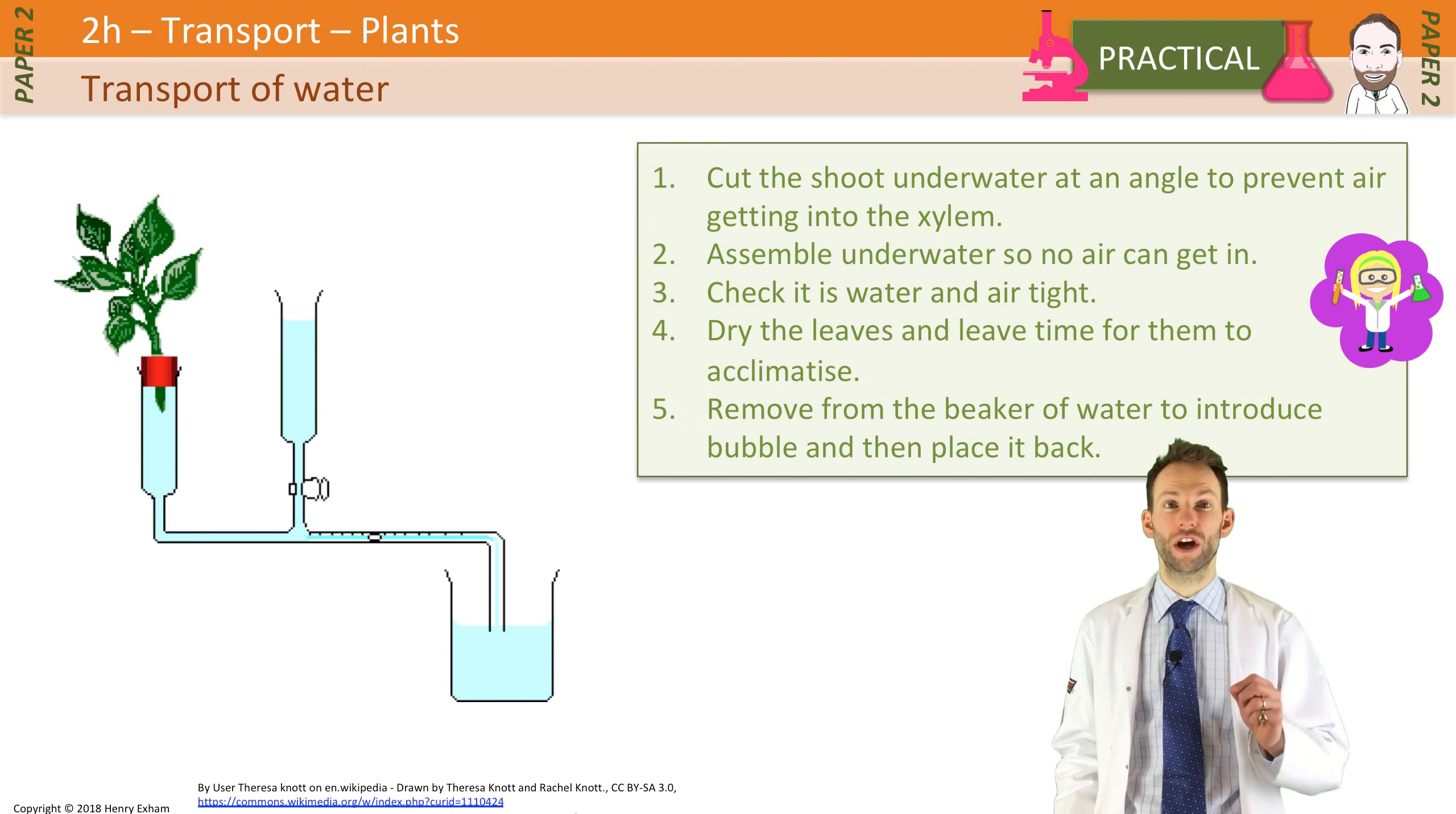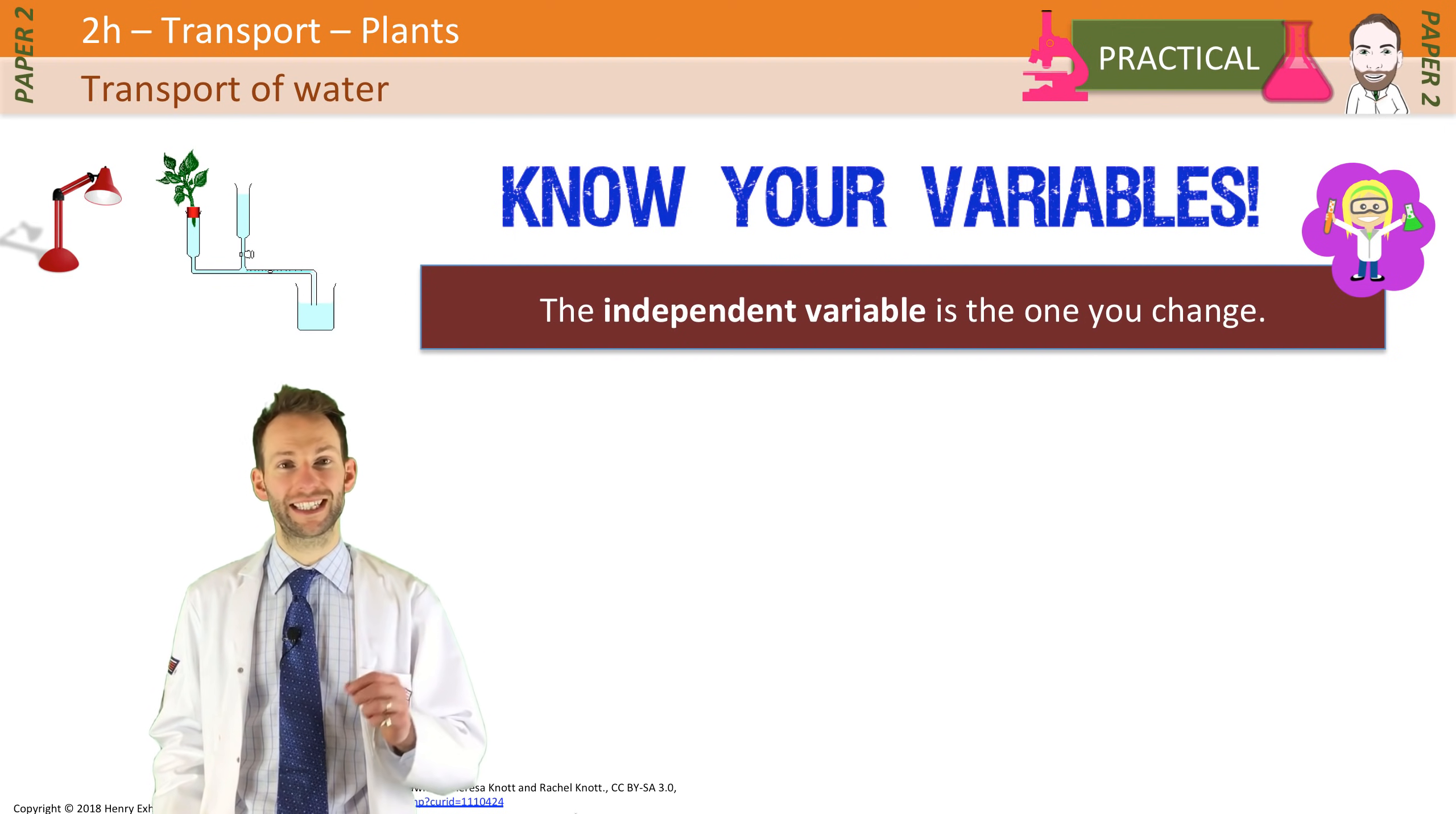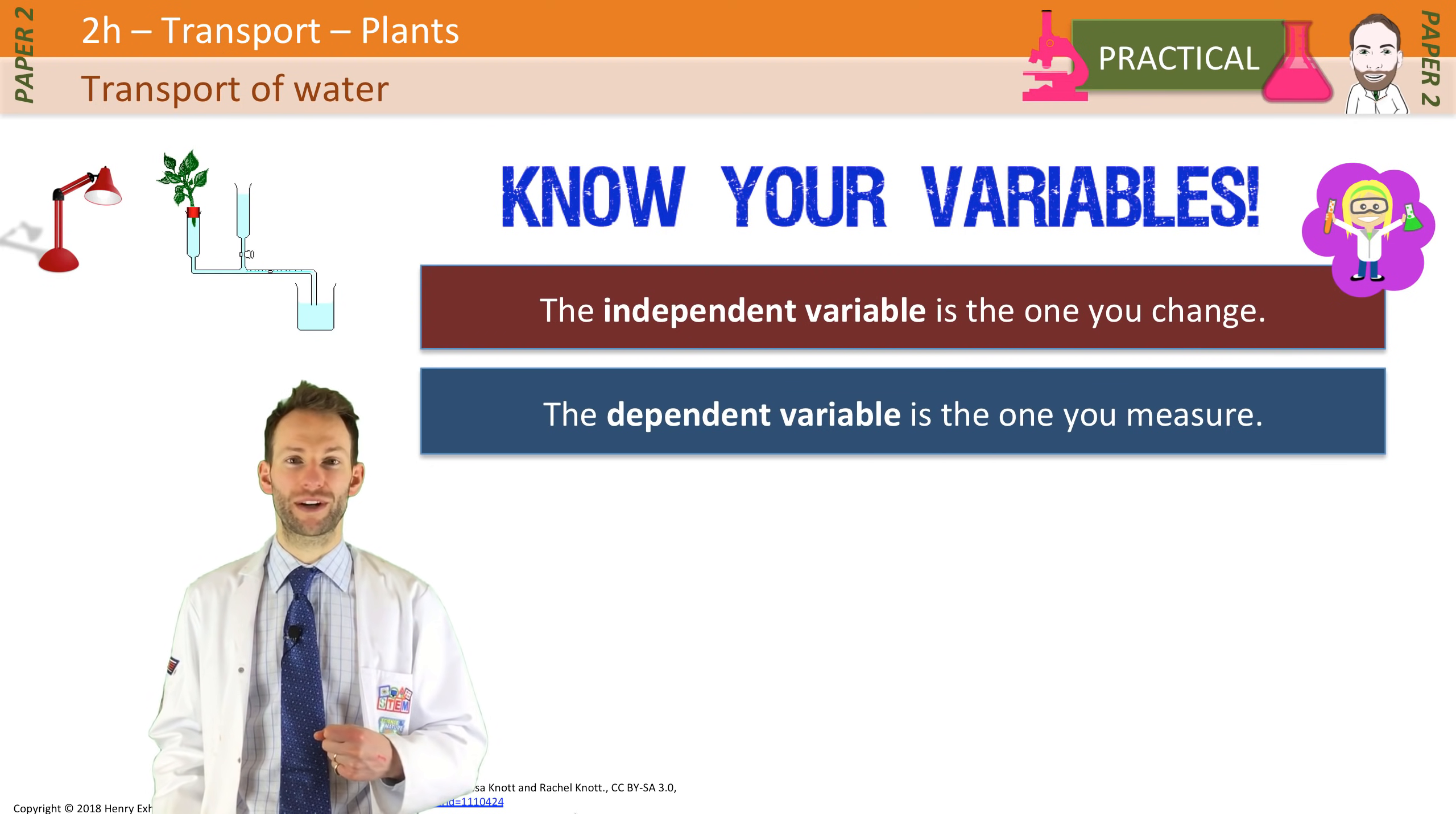Make sure you know the difference between your variables. The independent variable is the one that you change. Make sure you only investigate one independent variable at a time. So for example, it could be in this case, in this diagram, light intensity. That is the thing you are changing as the experimenter. The dependent variable is the variable that depends on the thing that you've just changed. It's the variable that you're going to measure. In this case, it's going to be the distance moved by the bubble in a given amount of time, which is essentially the rate of transpiration.